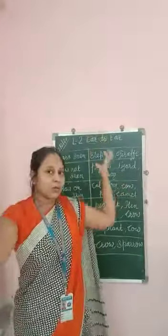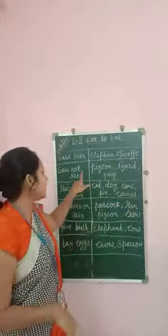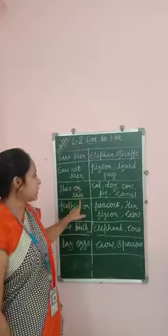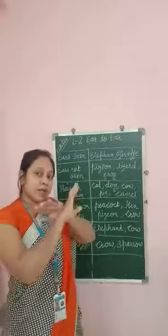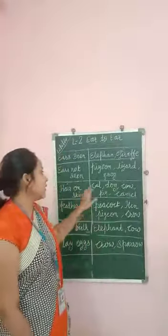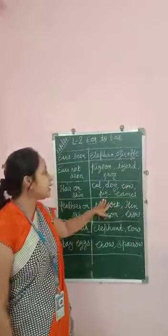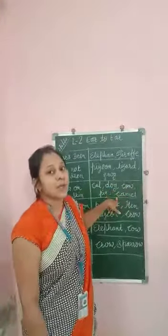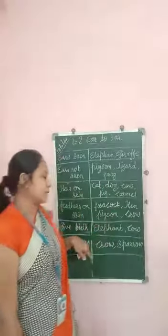But from the outside of their body we cannot see their ears. Hair on their skin — animals who have hair on the outside of their skin: cat, dog, cow, pig, camel — this kind of animal has hair on the outside of their skin.